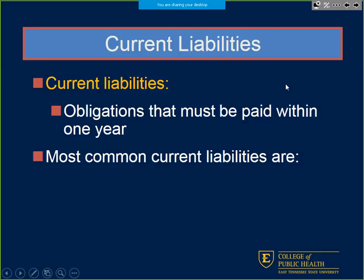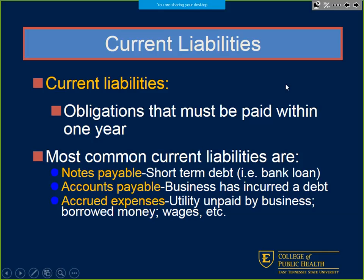Current liabilities are things paid within one year. Most common: notes payable — these are bank loans, more along the lines of short-term debt. We have an accounts receivable side expecting money in, and an accounts payable side on the reverse where we've incurred debt. Then accrued expenses — utilities, wages, things we pay out biweekly or monthly.